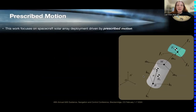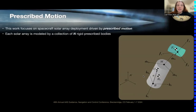The focus of this work is spacecraft solar array deployment driven by prescribed motion. Our spacecraft has two symmetric solar arrays, and each array is modeled by a collection of N rigid prescribed bodies. In previous work, we derived the equations of motion for a single rigid body relative to our spacecraft hub, and this work shows how we can expand that capability and exploit the modularity of the Basilisk astrodynamics software to append any number of bodies to our spacecraft.